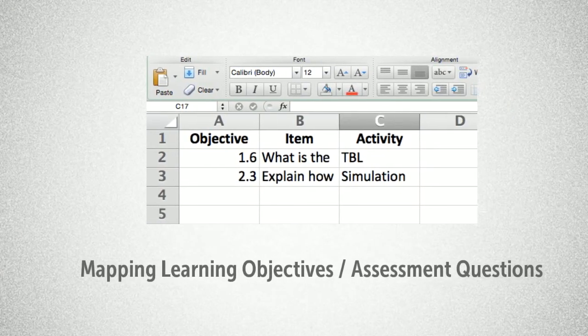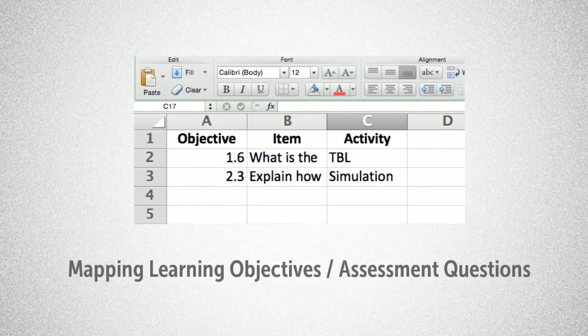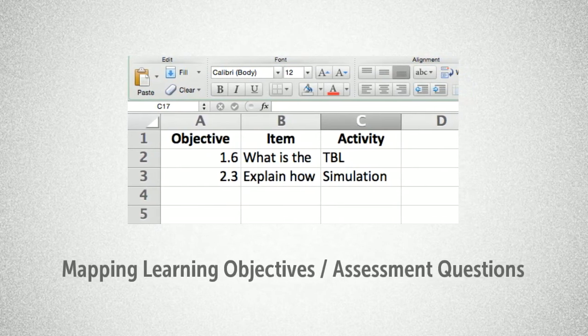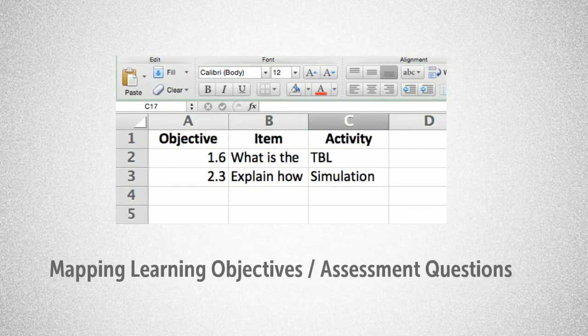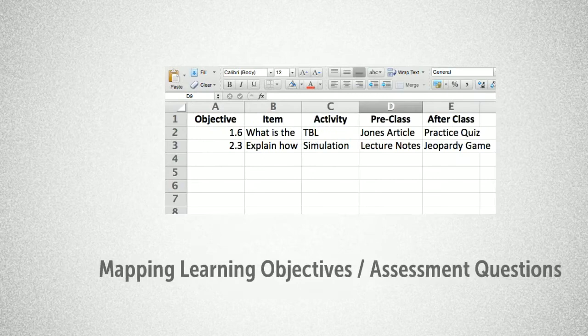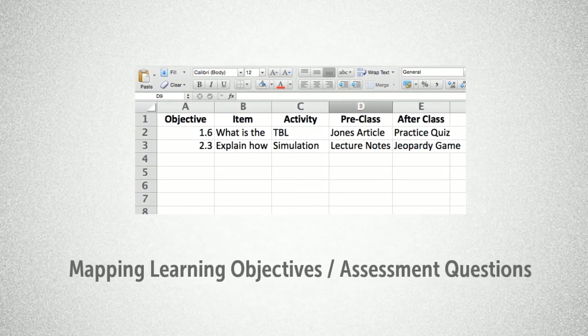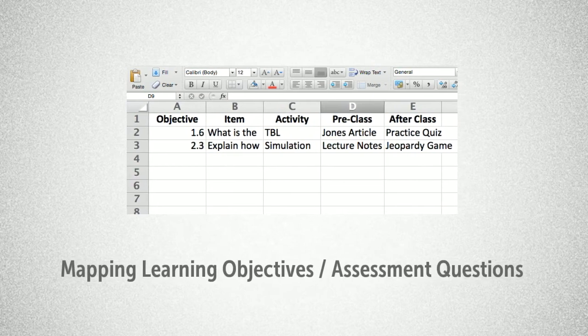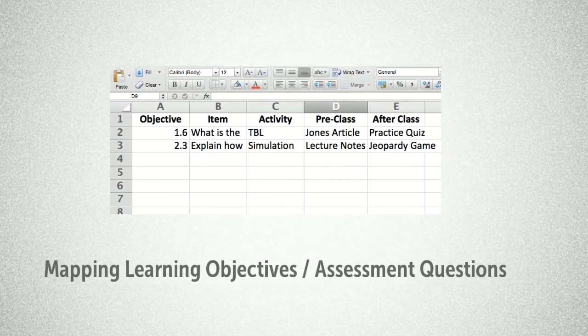Here's a practical tip. Use Excel to map your course. The far left column would be the learning objective. The second column would be the assessment question. And the third column would be what class session or activity supports that learning objective. You can go one step further and add sections such as what students need to do pre-class to prepare for in-class activities, and what they may do after class to further support their learning.